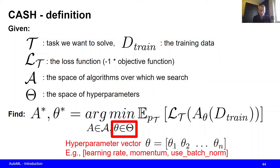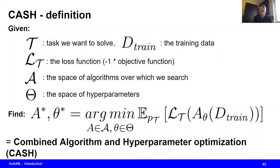I want to stress that theta is actually a vector — a hyperparameter vector consisting of different components. For example, if we are dealing with neural networks, this vector could include the value of the learning rate, the value of momentum, and the value of whether we want to use batch norm or not. This entire formulation is what we call combined algorithm hyperparameter optimization, or CASH.